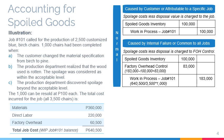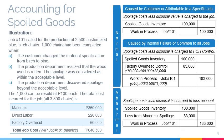In Scenarios A and B, the spoilage was considered normal. Normal spoilage is spoilage that is considered within the acceptable level. In Scenario C, on the other hand, the spoilage was considered abnormal. Abnormal spoilage is spoilage that is considered beyond the acceptable level, and is charged to a loss account at cost less disposal value. Hence, loss from abnormal spoilage is debited for 83,000 pesos.